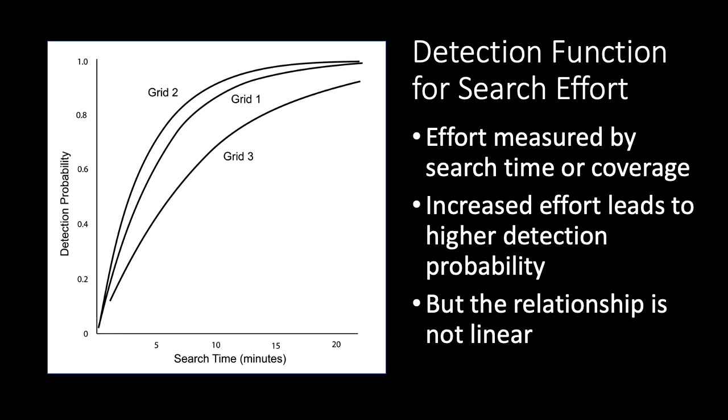In this slide, for example, we measure search time by the number of minutes of search applied to a particular area. And there are three different curves for three different search areas called grid 1, 2, and 3. For all three grids, notice how the relationship is not linear. The detection rate is quite steep in the first few minutes of search, but then it levels off. In fact, after about 15 minutes of search, there's not much point in searching further, as that would yield hardly any new detections.